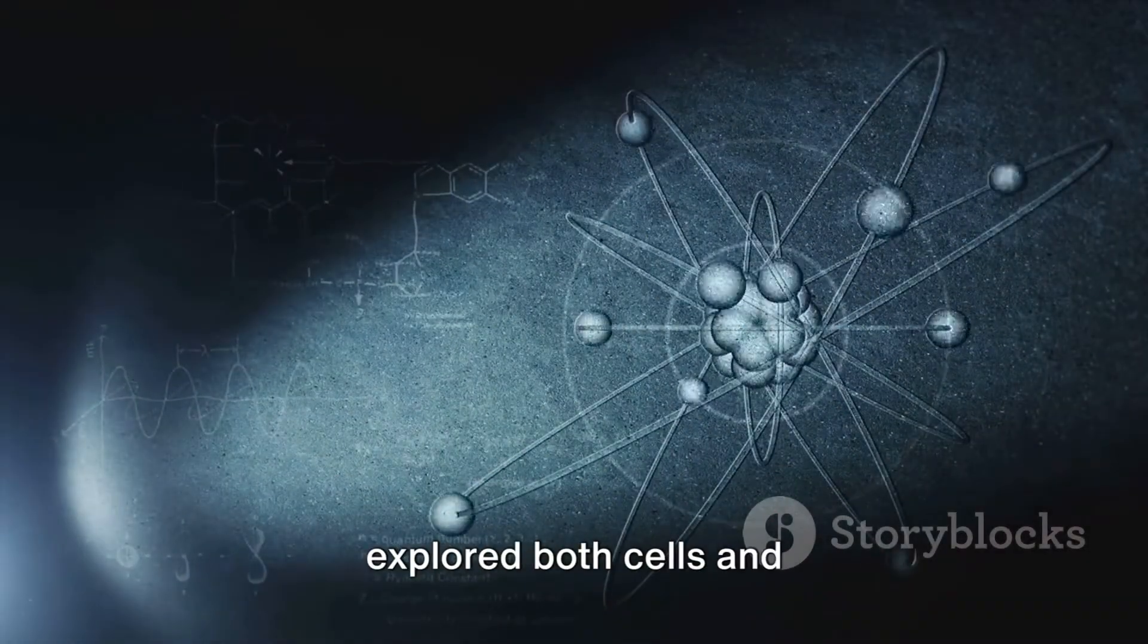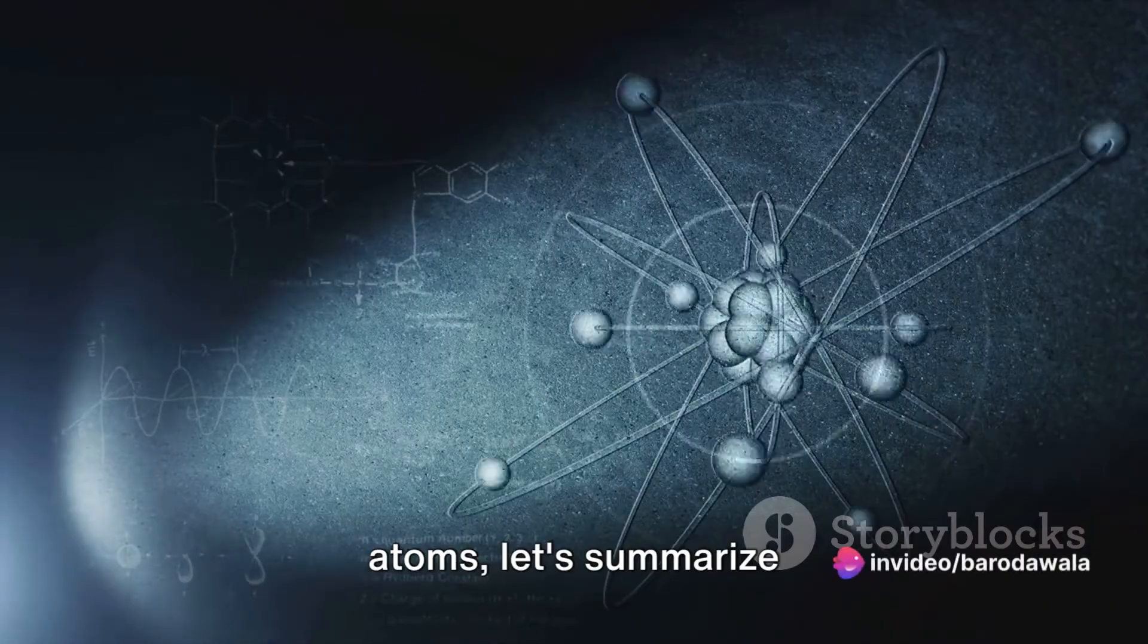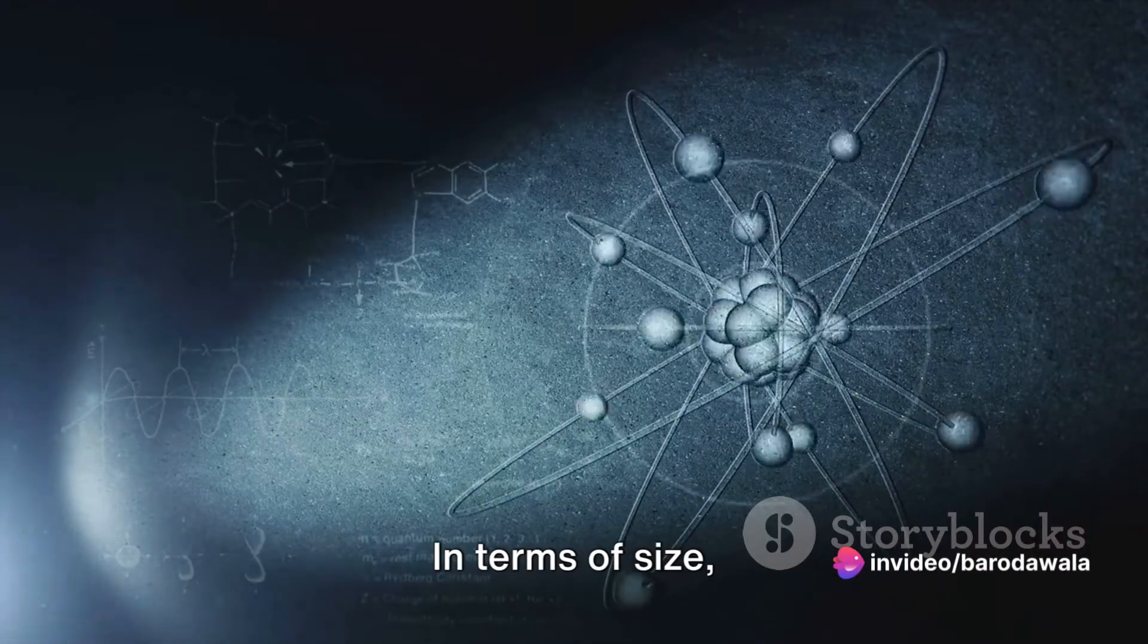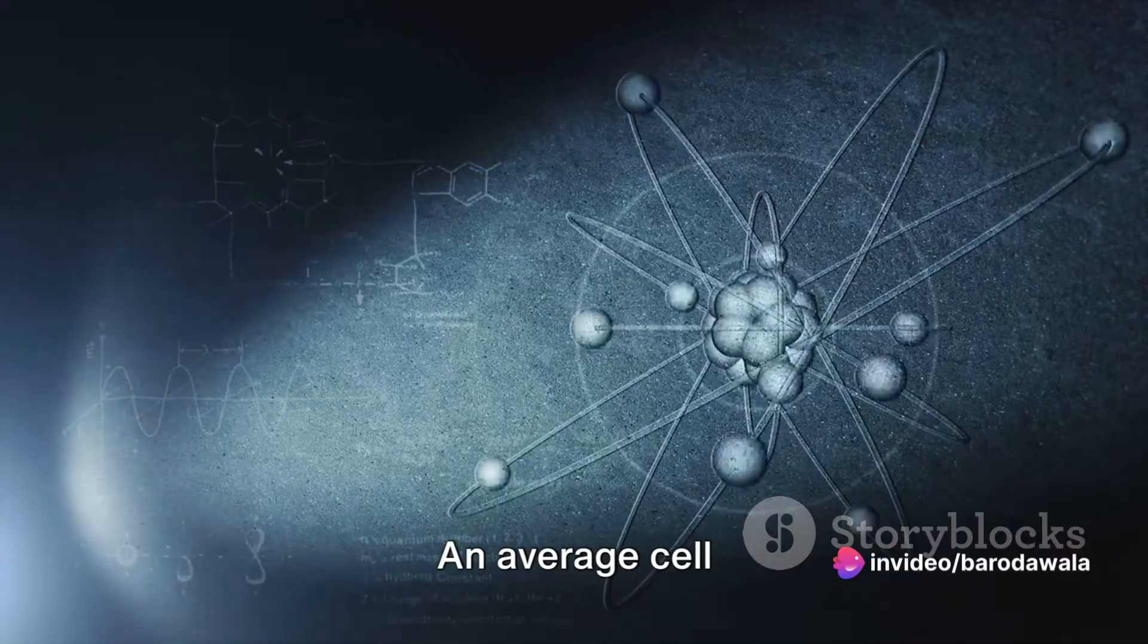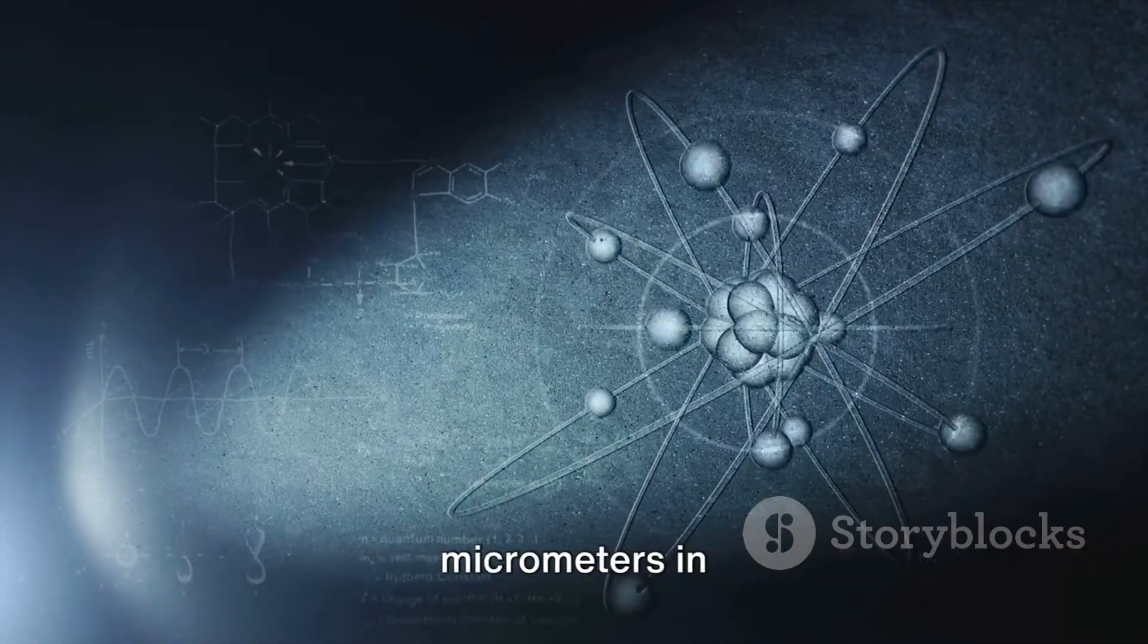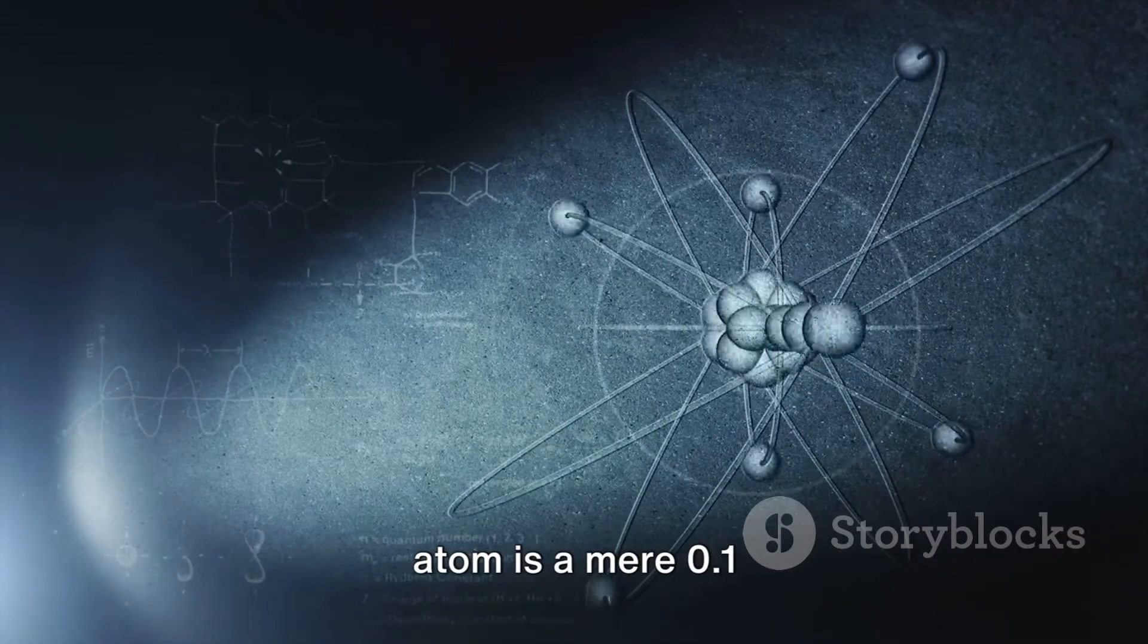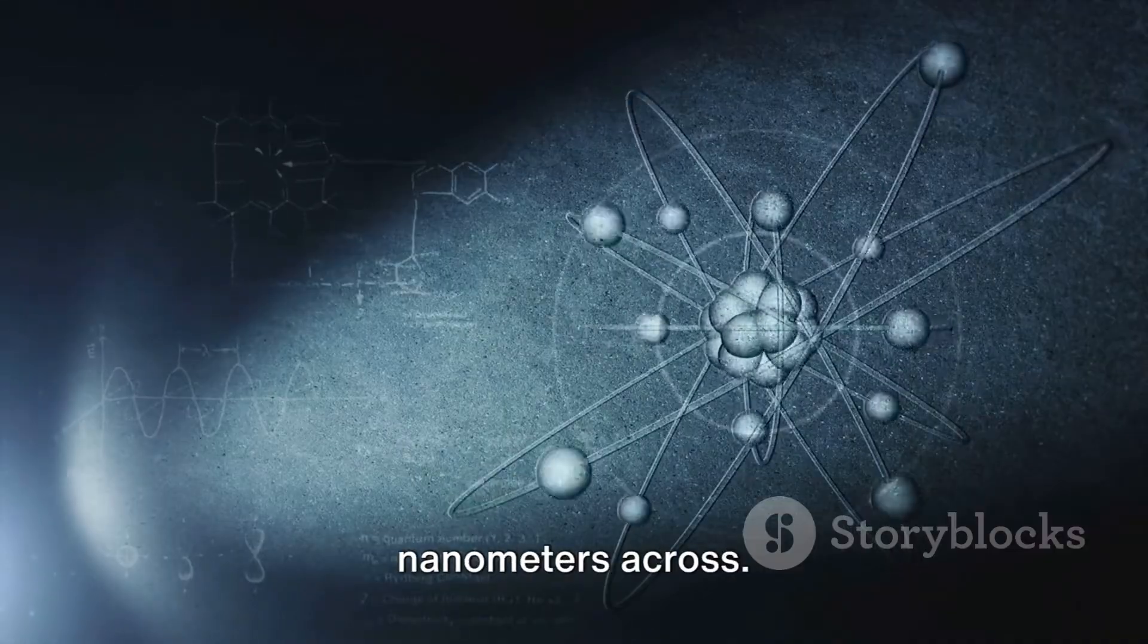Now that we've explored both cells and atoms, let's summarize the key differences. In terms of size, cells tower over atoms. An average cell measures roughly 10 micrometers in diameter, whereas an atom is a mere 0.1 nanometers across.